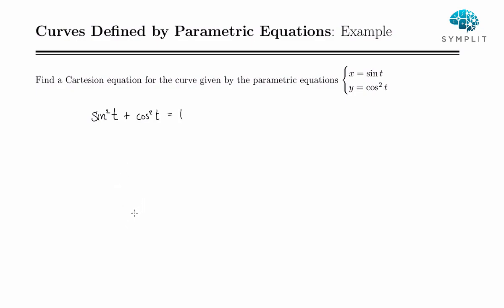And now we just replace these with the variables that we have. So sine squared, that's just going to be x squared. So you have x squared plus cosine squared, that's just y. And then of course equals 1.